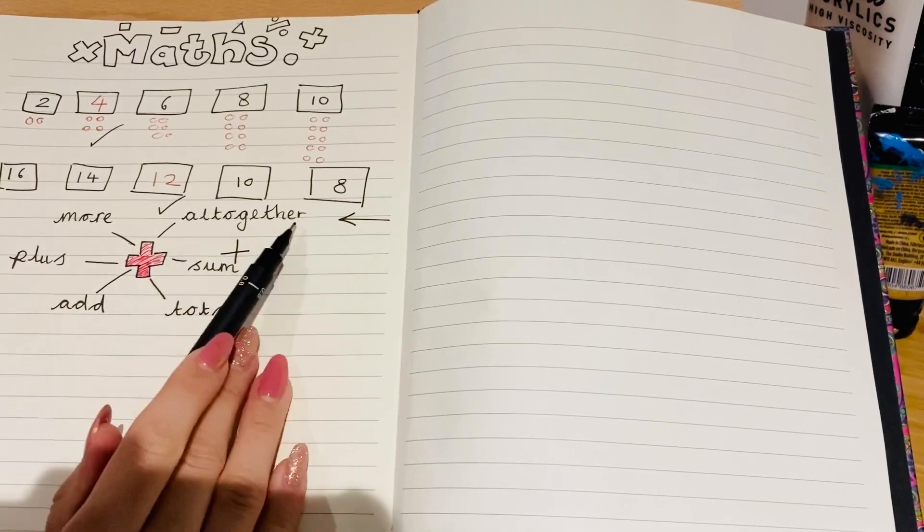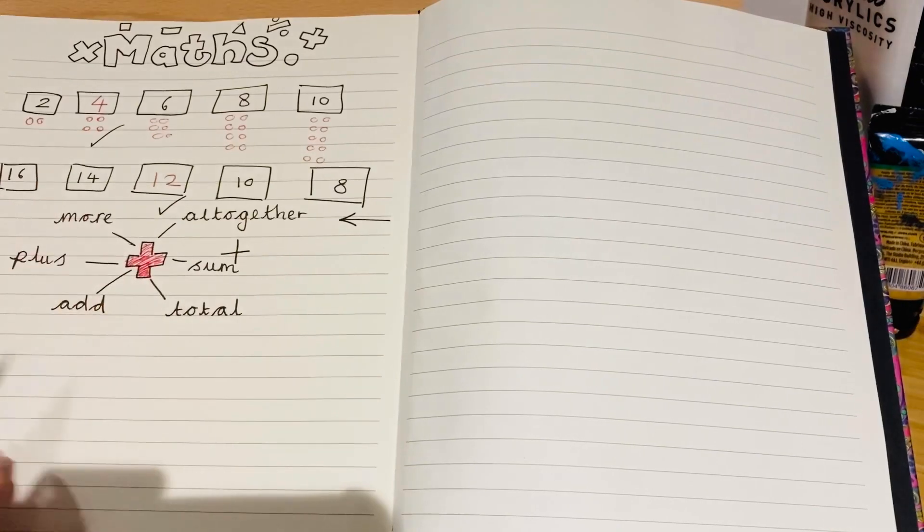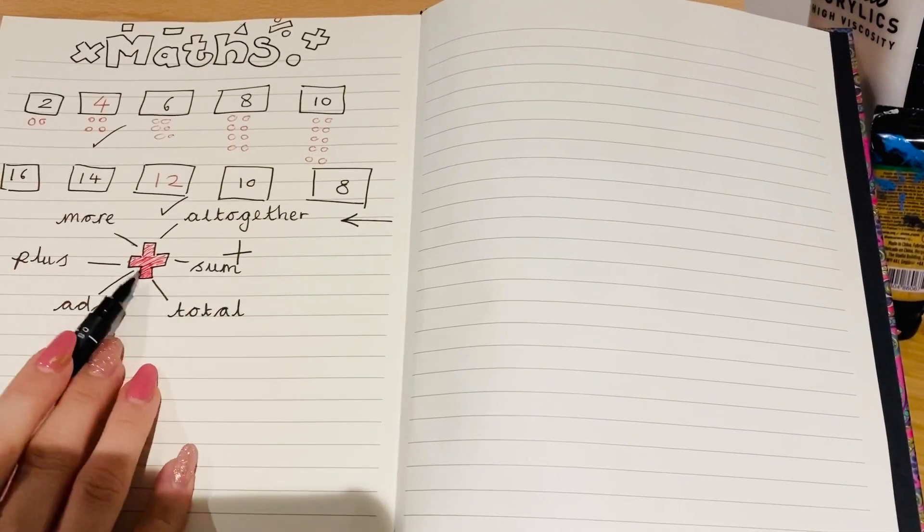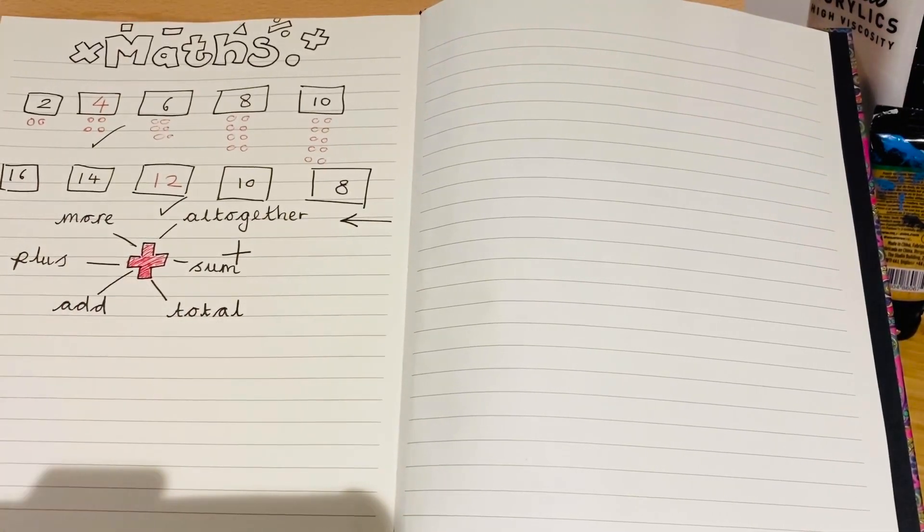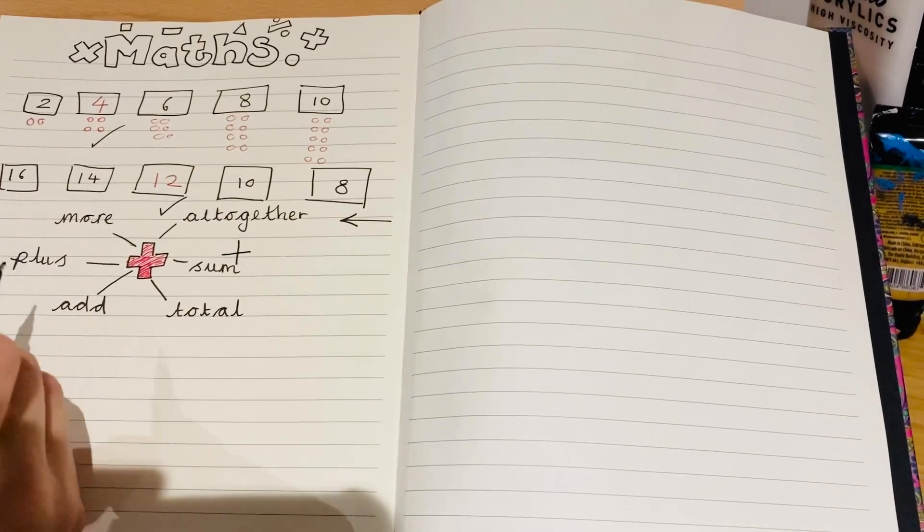So I've just written a few words around this symbol that I could think of. You might have thought of some extra ones, and if you have, let me know in the comments. I've thought of more, altogether, sum, total, add and plus. These are all kinds of words that you'll hear when you see that kind of symbol, or when we're doing this operation in our maths. So I'm going to do some calculations underneath.